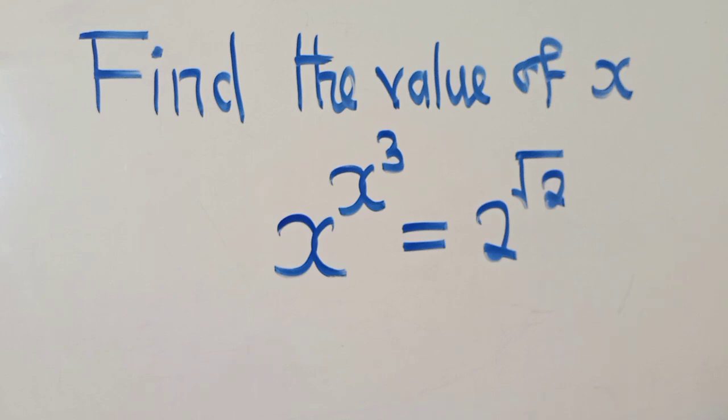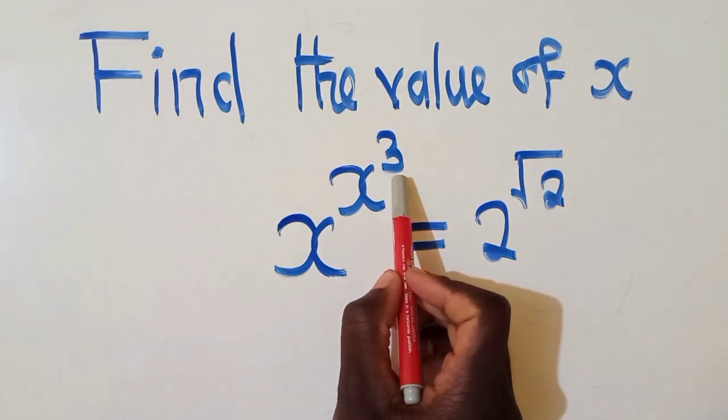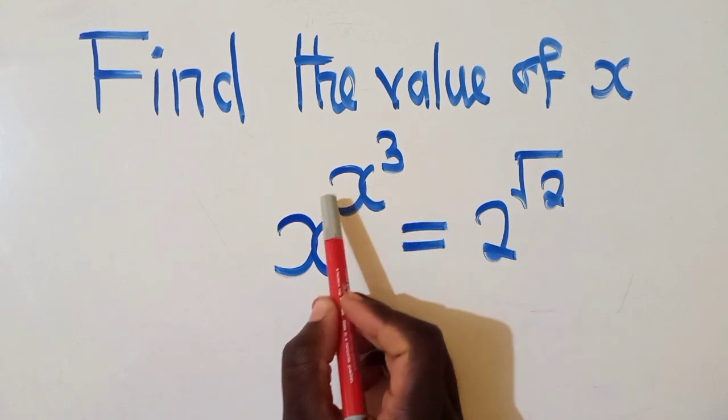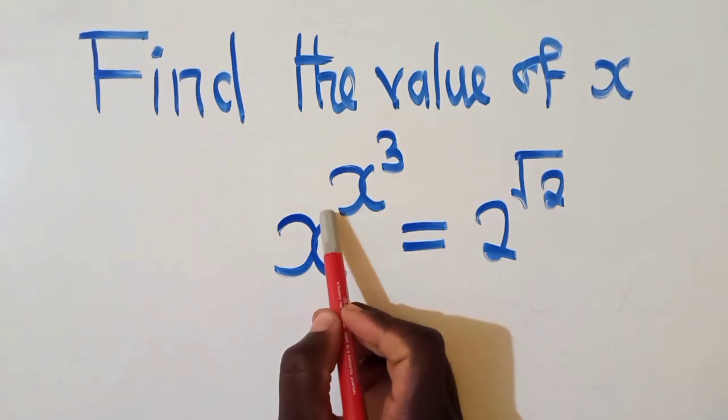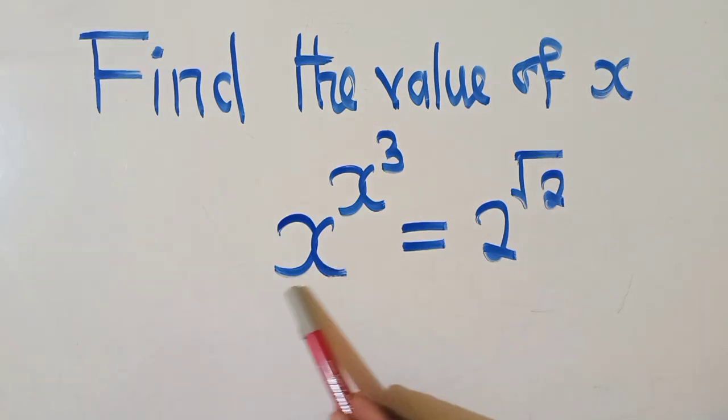Basically, you look at the power which is right here - this is power 3. So you have to make sure that you also have a power 3 on this x right here on the base, so that we have the same thing here and the same thing here.